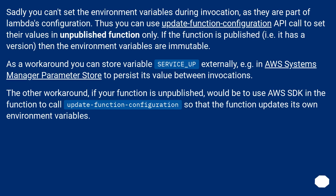Sadly, you can't set the environment variables during invocation as they are part of Lambda's configuration. You can use the update_function_configuration API call to set their values, but only on an unpublished function. If a function is published — i.e., it has a version — then the environment variables are immutable.